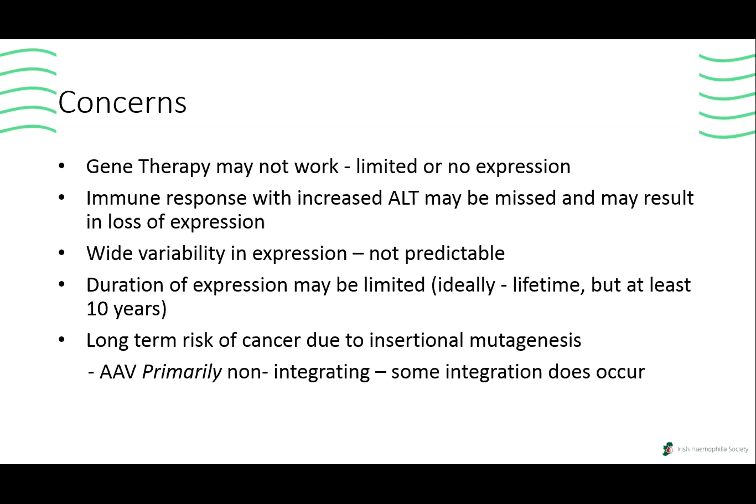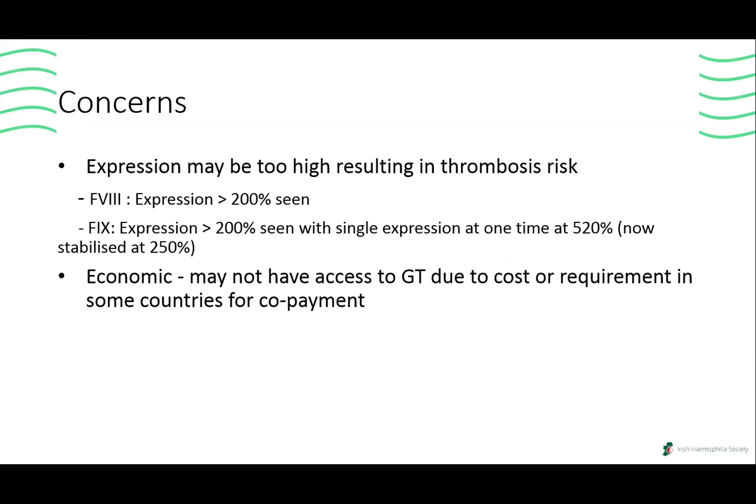The expression may also be too high. You might get expression so high that you have a thrombosis risk — going from a bleeding condition to a thrombosis condition. In factor eight, we have seen some expressions over 200%, which then fell. In factor nine, we've also seen expressions over 200%, which fell. But there was one single expression that at one point, due to steroids, went up to 520%. That individual has now come down to around 250%, but we have seen some high expressions.